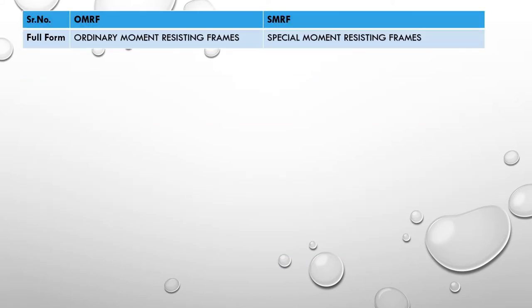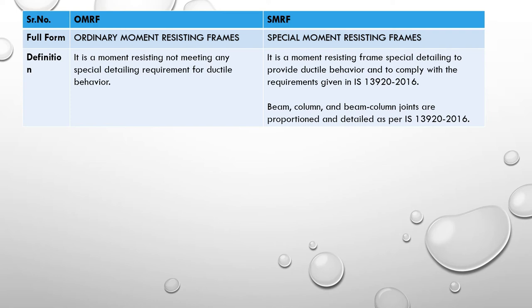First, the full forms: OMRF means Ordinary Moment Resisting Frame, and SMRF means Special Moment Resisting Frame. The definition of OMRF is that it is a moment resisting frame that does not meet any special detailing requirement for ductile behavior — it does not need to comply with IS 13920. In contrast, SMRF is a moment resisting frame that is specially designed to be ductile and to comply with the requirements of IS 13920:2016.